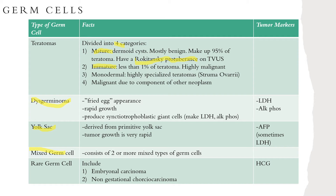Monodermal teratomas are highly specialized teratomas made up of a single cell type. A common one you may see is struma ovarii — these are composed of mature thyroid tissue, and secretion of thyroid hormone can result in clinical hyperthyroidism in about 25 to 35 percent of patients. Another type of monodermal teratoma is a primary carcinoid neoplasm of the ovary, which is overall very rare. However, these patients can develop carcinoid syndrome about one-third of the time, with elevation of the 5-HIAA metabolite of serotonin in urine.